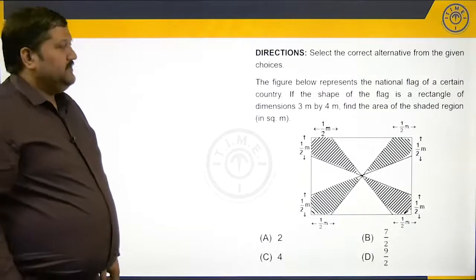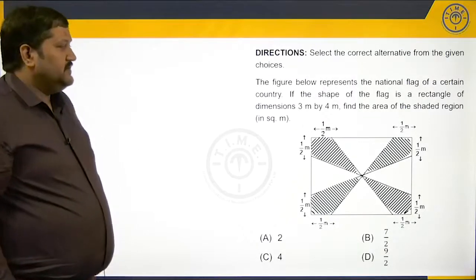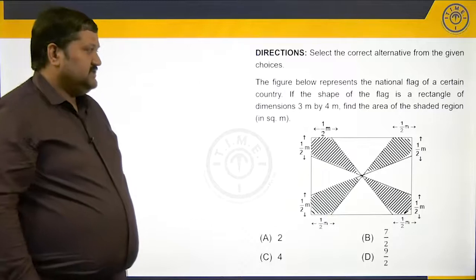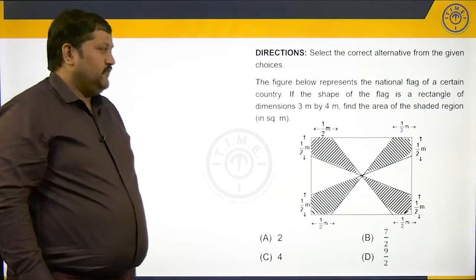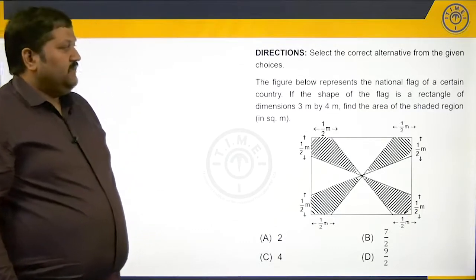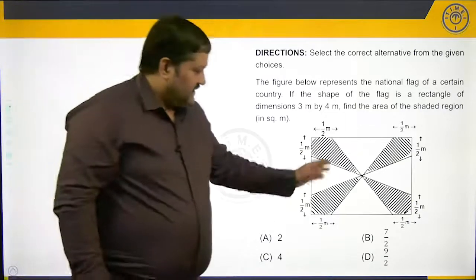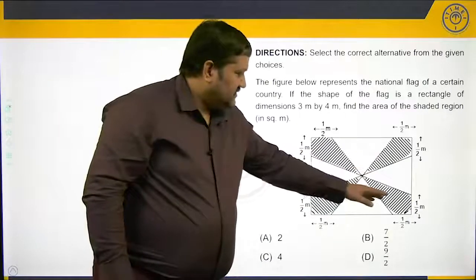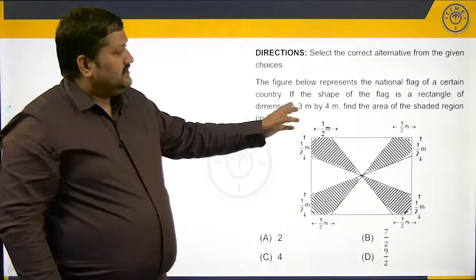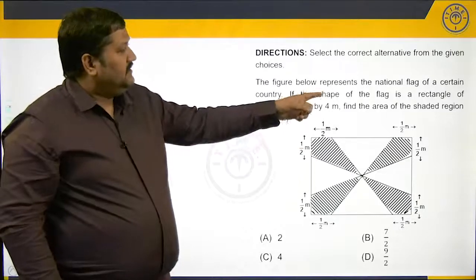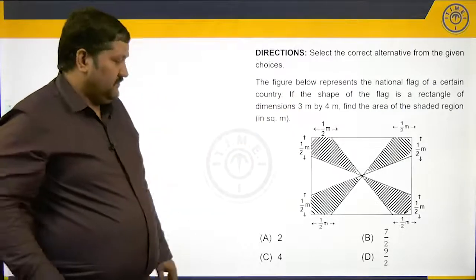The figure below represents the national flag of a certain country. The shape of the flag is a rectangle of dimension 3 by 4. We need to find the area of the shaded region, and it is already given that the shape of the flag is a rectangle of dimension 3 by 4.